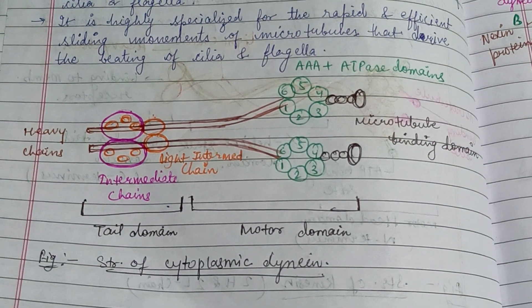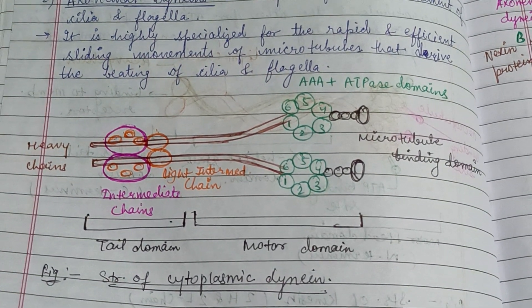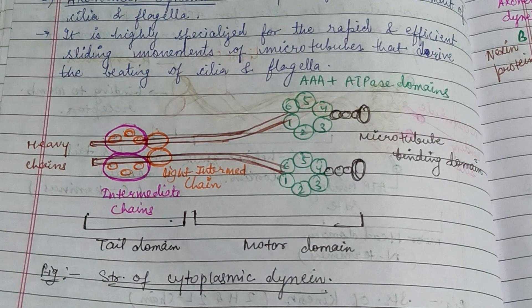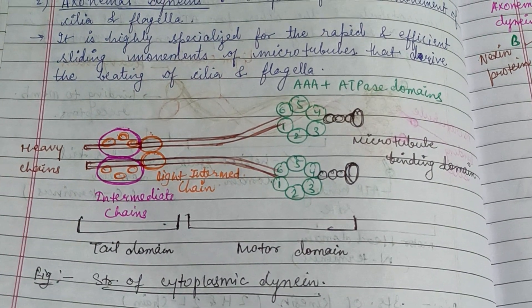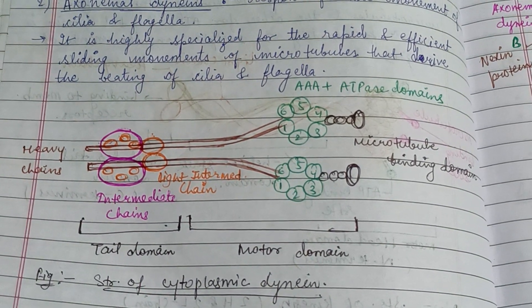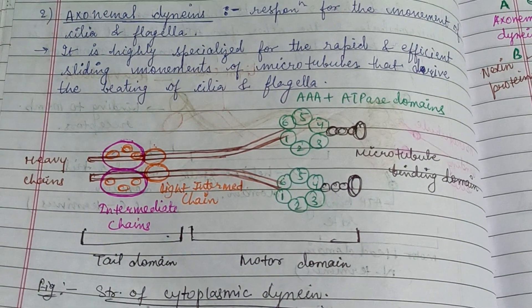The structure of cytoplasmic dynein contains the tail domain, motor domain, microtubule binding domain, and the heavy chains.